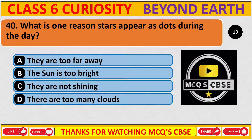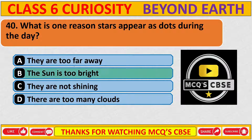What is one reason stars appear absent during the day? The correct answer is B, the sun is too bright.